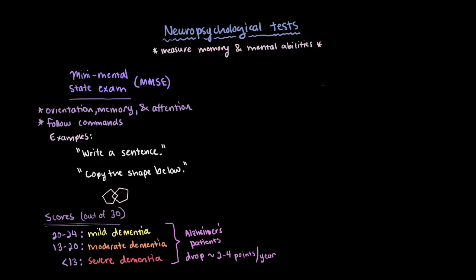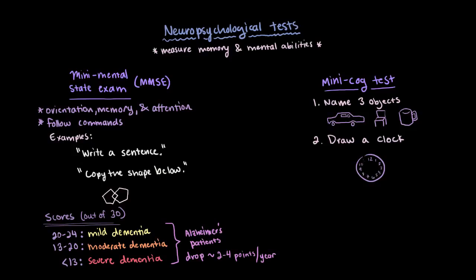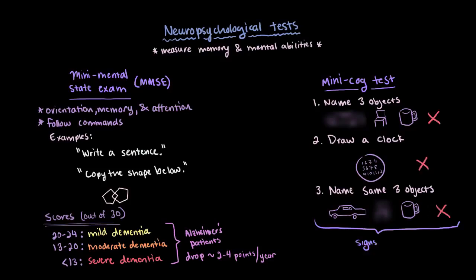Another more simple test that might be administered is called the Mini-Cog test. In this test, the patient is asked to name three objects and then repeat them back to the doctor, like car, chair, and mug. For the next part, the patient is asked to draw an analog clock and also asked to draw a specific time. Thirdly, the patient is asked what those three objects initially were: car, chair, and mug. If the patient fails one or all of these tasks, it might suggest signs of dementia and may require further evaluation.